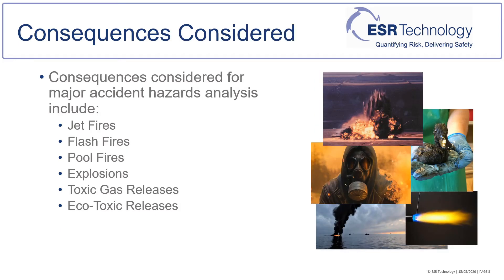Consequences considered within a major accident hazards analysis include jet fires, flash fires, pool fires, explosions, toxic gas releases, and their effects on people and property as well as on the environment.